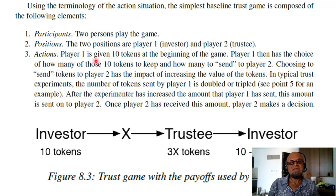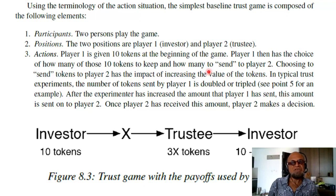Actions: player one is given 10 tokens at the beginning of the game. Player one then has the choice of how many tokens to keep and how many to send to player two. Choosing to send tokens to player two has the impact of increasing the value of the tokens. This is the action situation where there is some sharing involved — player one, the investor, gives some money to the trustee, but the total value of the tokens goes up.